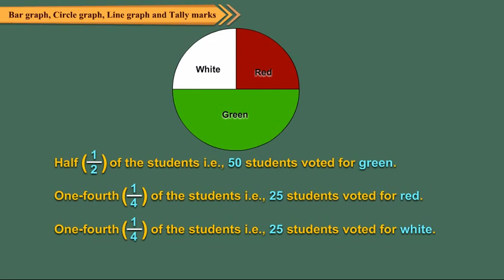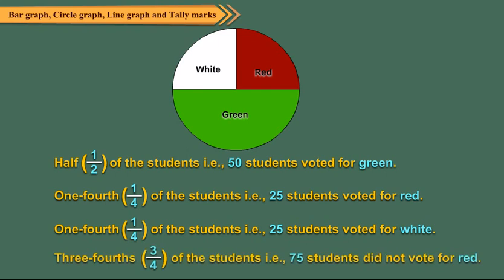Can you find how many did not vote for red? Clearly, three-fourths of the students, i.e. 75 students, did not vote for red.